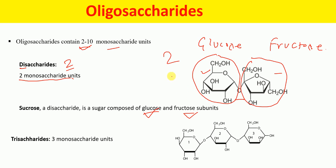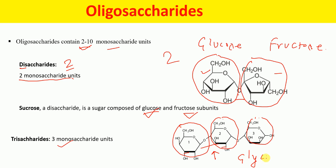Similarly, trisaccharides are carbohydrates that contain three monosaccharide units. One saccharide unit is linked to another saccharide unit by a glycosidic linkage. Tetrasaccharides contain four saccharide units, pentasaccharides contain five, and so on. So oligosaccharides are carbohydrates containing two to ten monosaccharide units, in which each saccharide unit is linked to another by glycosidic linkage.